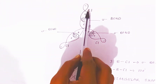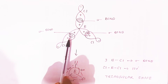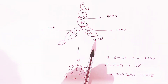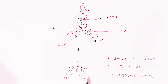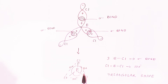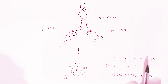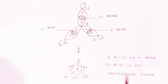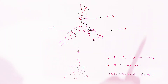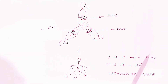Boron is at the center and the three chlorine atoms approach and form three sigma bonds. The bond angle between chlorine, boron, and chlorine is always 120 degrees. So there are three boron-chlorine sigma bonds, and the Cl-B-Cl bond angle is 120 degrees. When you see the shape, it looks like a triangle — so it is triangular planar in shape. This information is very important for examination purposes.